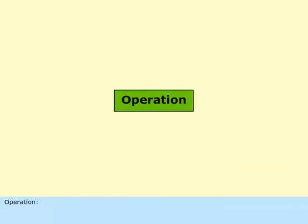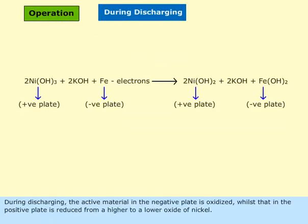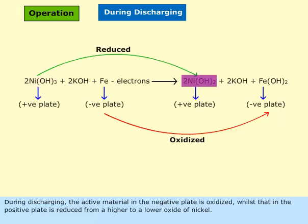Operation. During discharging, the active material in the negative plate is oxidized, whilst that in the positive plate is reduced from a higher to a lower oxide of nickel.